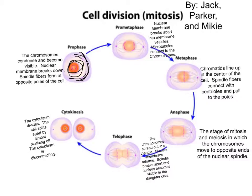Then to the next phase, chromatophase. The nuclear membrane breaks apart into membrane vessels. Microtubules connect to the chromosomes.